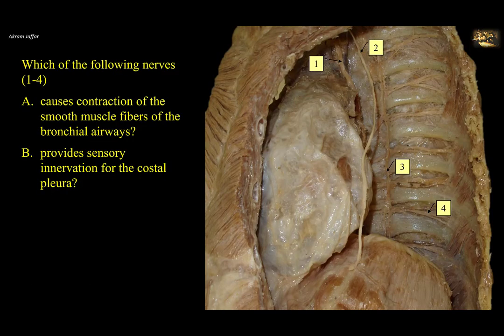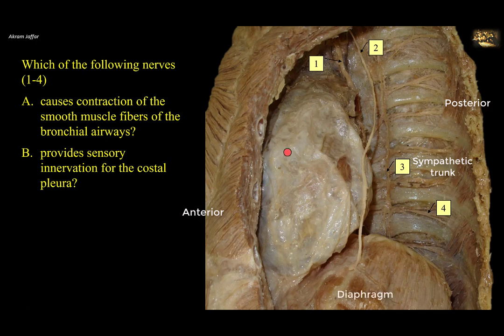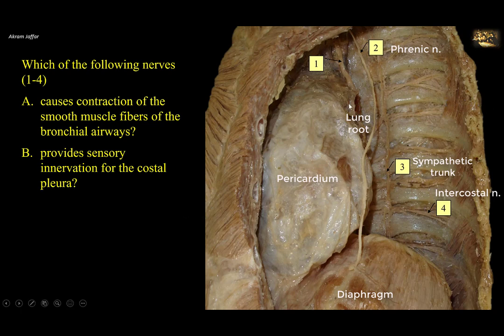Which of the following nerves, one to four, causes contraction of smooth muscle fibers of the bronchial airways and provides sensory innervation for the costal pleura? This is a view of the mediastinum from the left, with the posterior thoracic wall showing the sympathetic trunk, anterior thoracic wall with ribs and costal cartilages, and the diaphragm. Nerve two, the phrenic nerve, descends from the neck to supply the diaphragm. Nerve one is the vagus nerve, which passes behind the root of the lung — you can see it passing posterior to the left pulmonary artery.